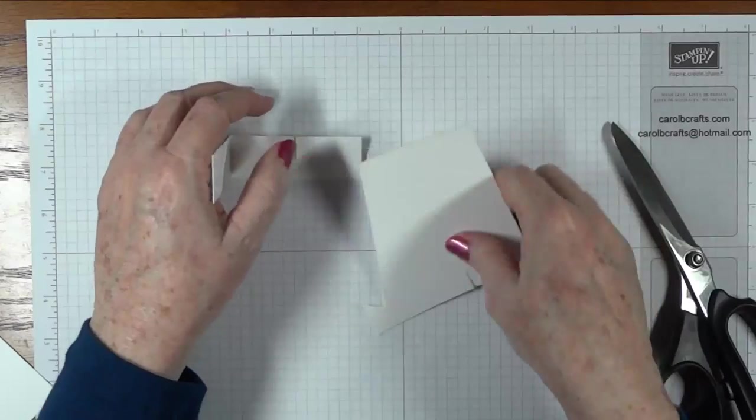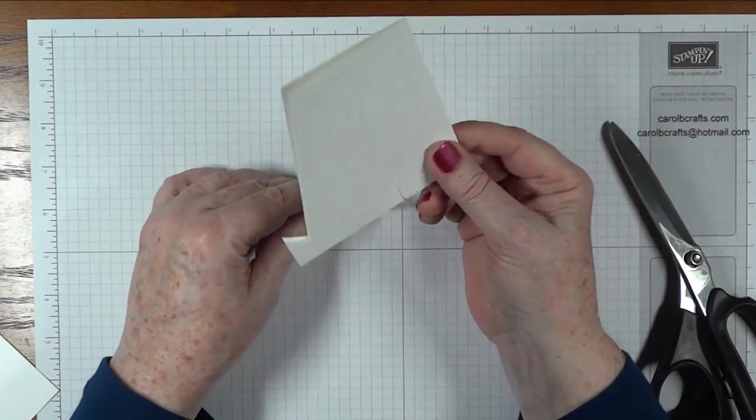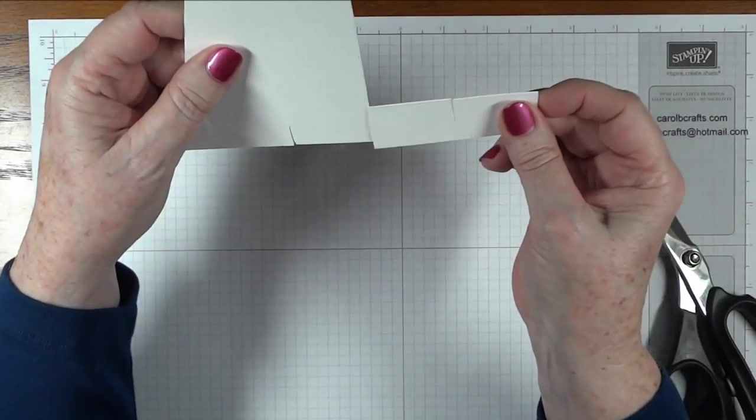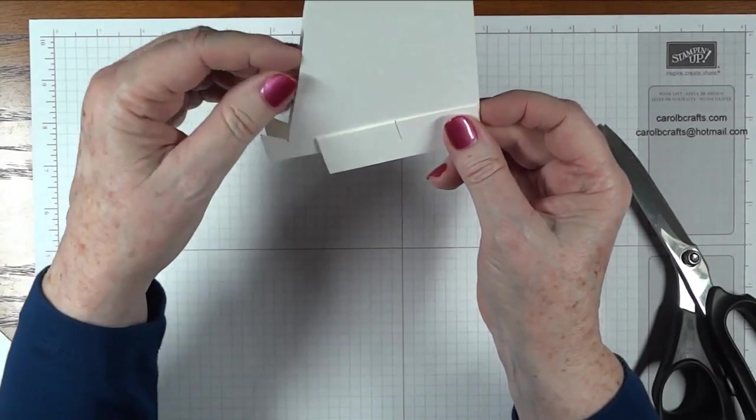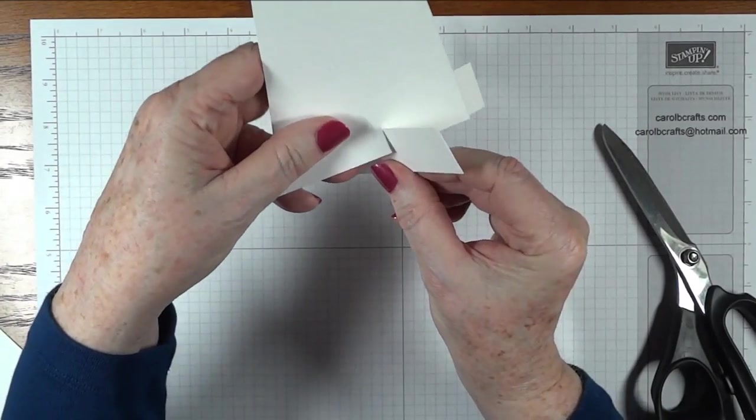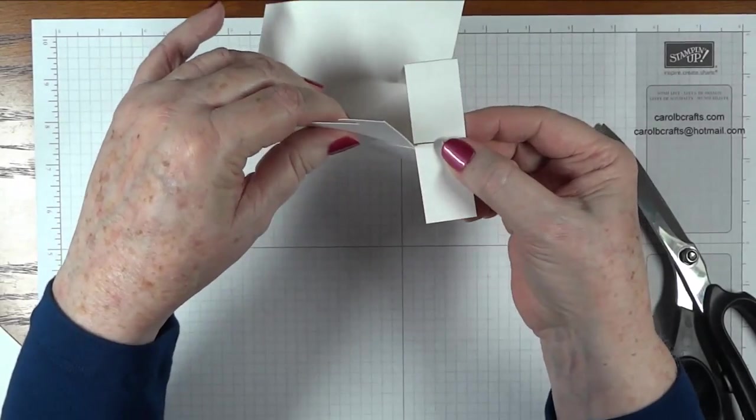Now, we'll take this piece and our stabilizer bar. And the folds should be facing each other. Open it up. Open them up. And put this one here. And then put this one here.